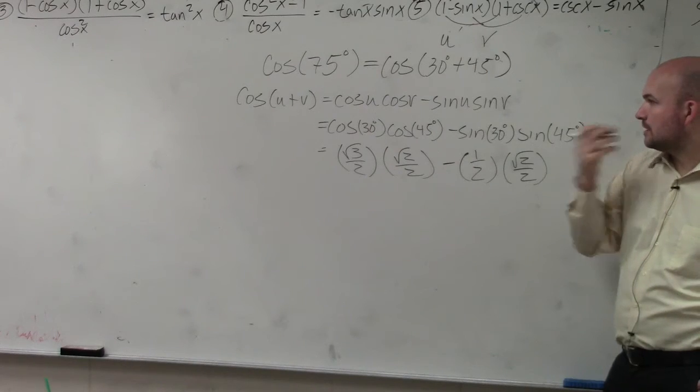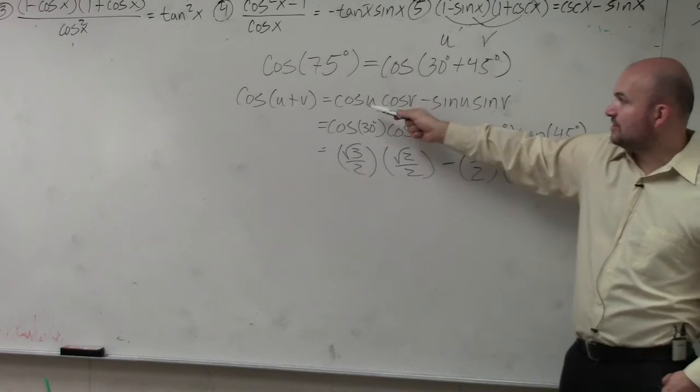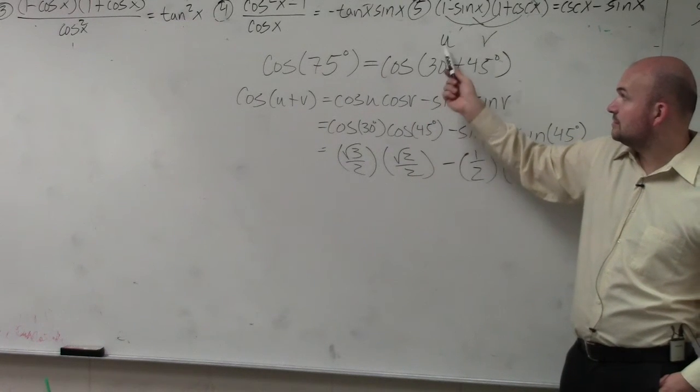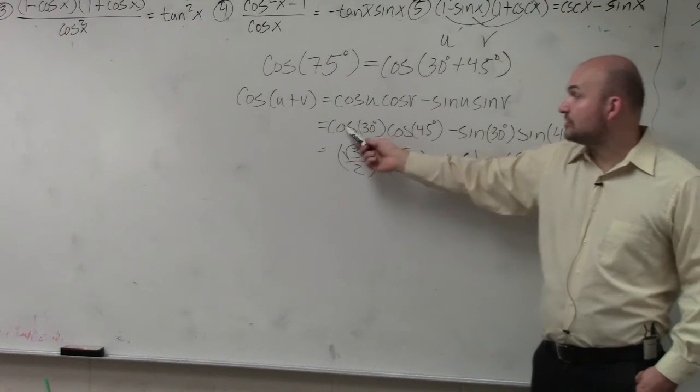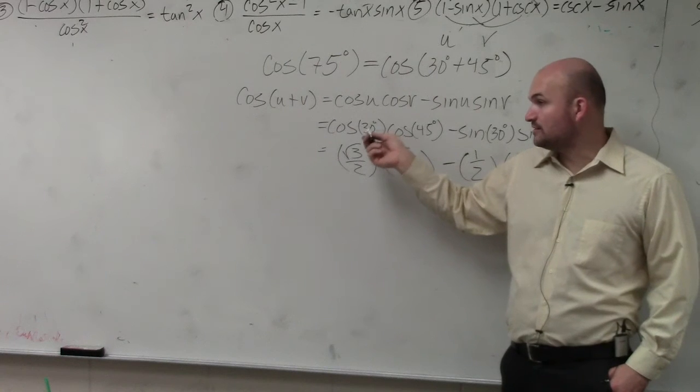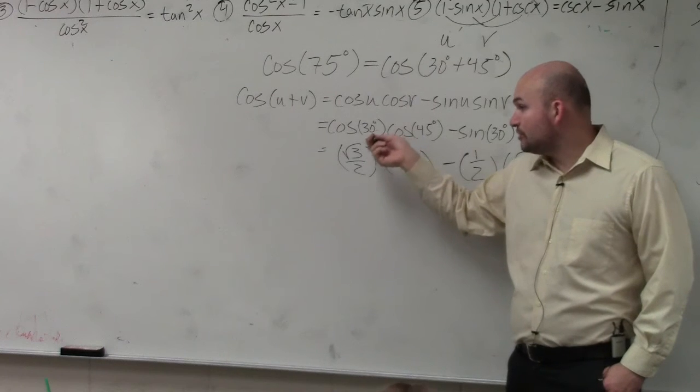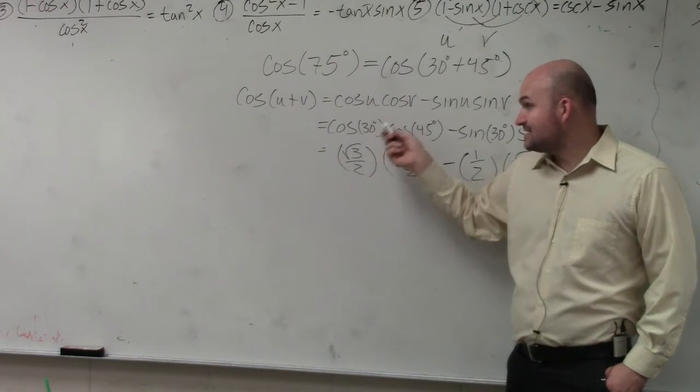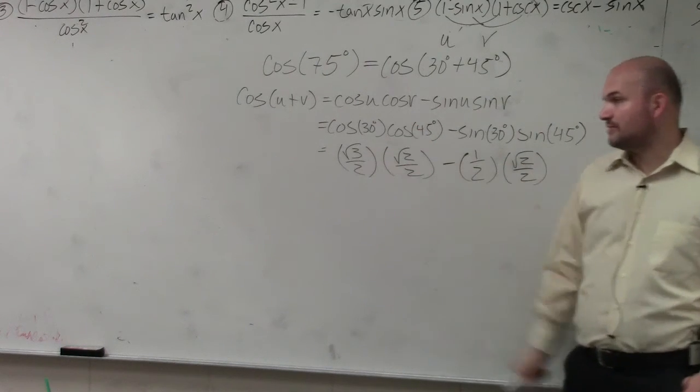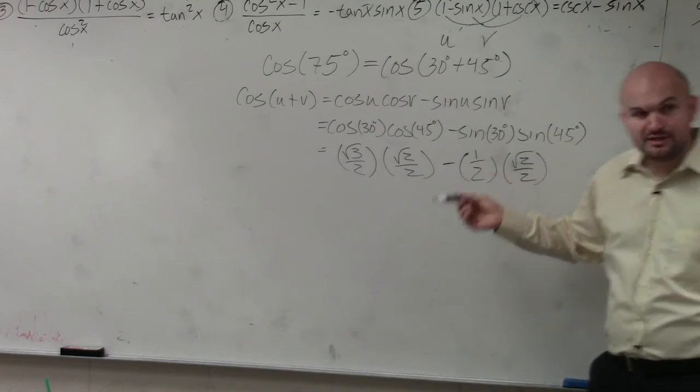All right. Well, this is the whole formula I wrote down, so you want to make sure you have the whole thing written down. And then all I did was wherever there was a u, I replaced that with 30 degrees. Wherever there's a v, I replaced that with 45 degrees. Now the cosine of 30 degrees, remember, is the x-coordinate of the coordinate point where the angle 30 degrees crosses the unit circle. So if you look on your unit circle, 30 degrees, the cosine is the x-coordinate, which is square root of 3 over 2. Cosine of 45 degrees, so forth. Now we just need to do our math to simplify.